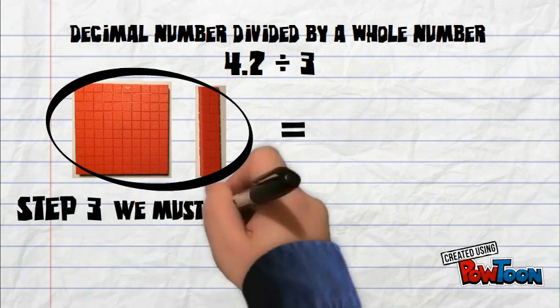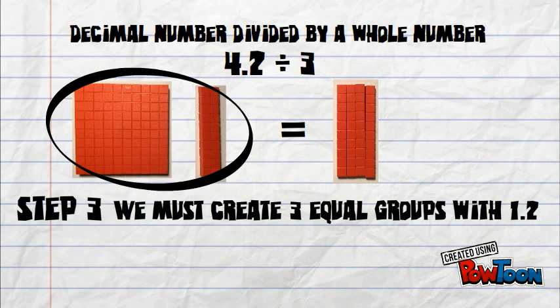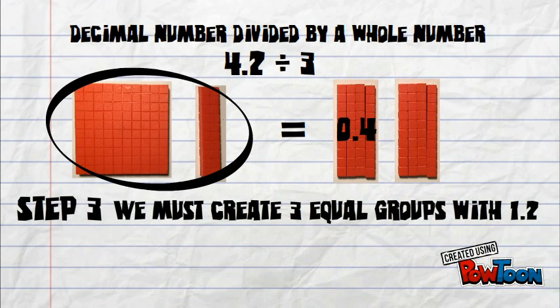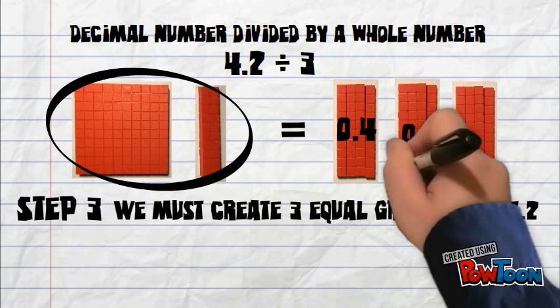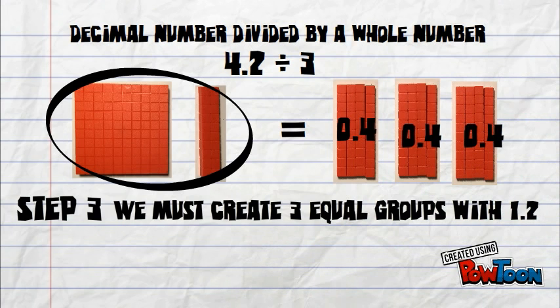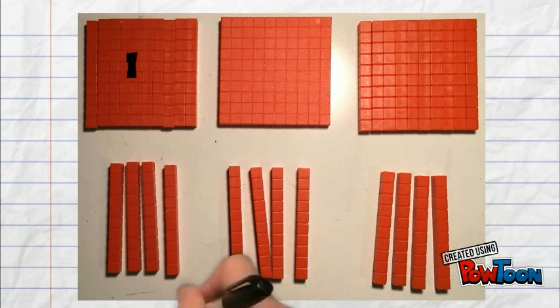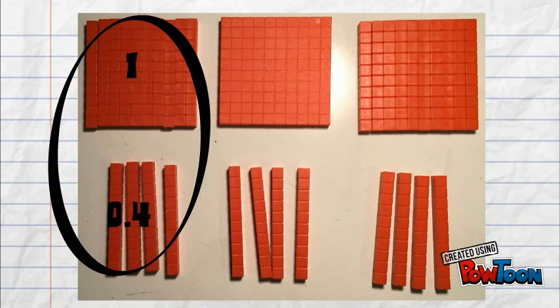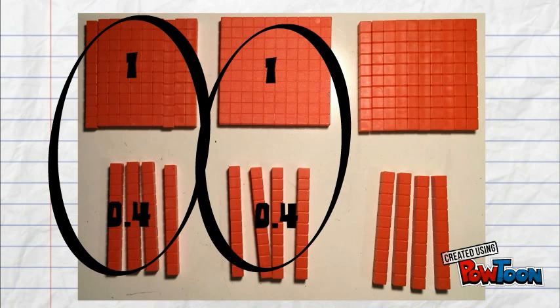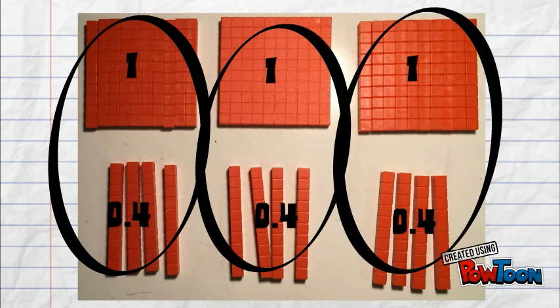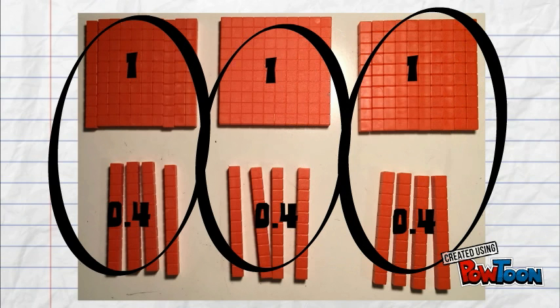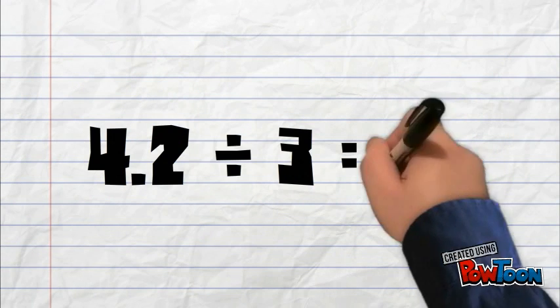The next step is to create 3 equal groups with 1 and 2 tenths. Once we've separated 1 and 2 tenths in 3 equal groups, each group has a value of 4 tenths. The answer is 1 and 4 tenths.